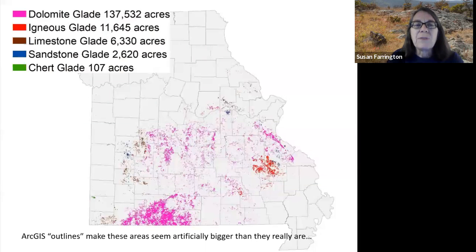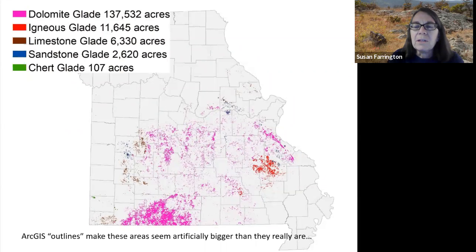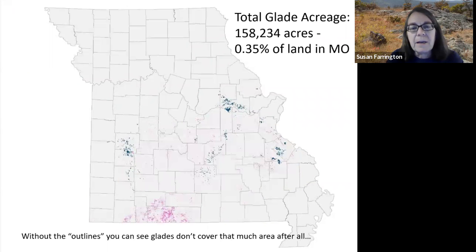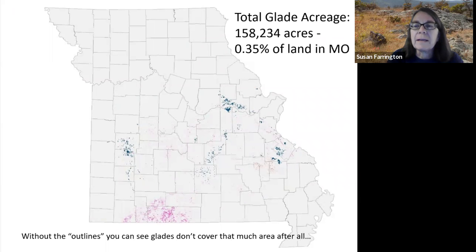Where are glades found in Missouri? They are mostly found south of the Missouri River and are particularly common in southwest Missouri. We'll look at each of the substrate types individually. Be aware that the outlines of each of the shapes makes them appear larger than they really are. If I take away the outlines, this provides a more realistic view of glades in Missouri, though much harder to see. Total acreage is a bit over 158,000 acres, just over a third of a percent of the total land in Missouri.